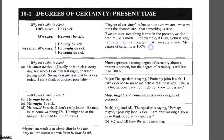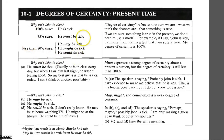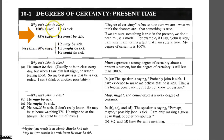Expressing degree of certainty in the present time. Degree of certainty refers to how sure we are about a case. In the present, there are three levels: less than 50% sure, 95% sure, and 100% sure. Let's analyze each level of degree of certainty in the present.